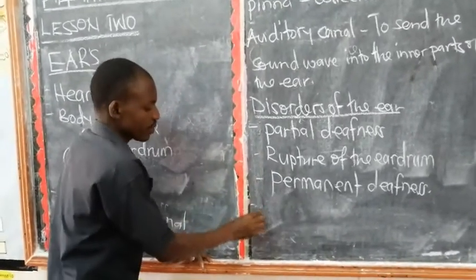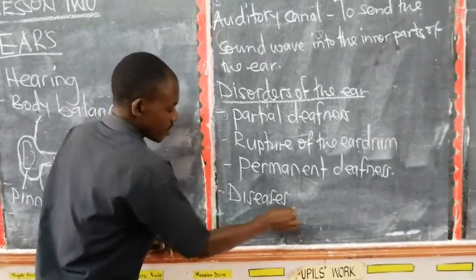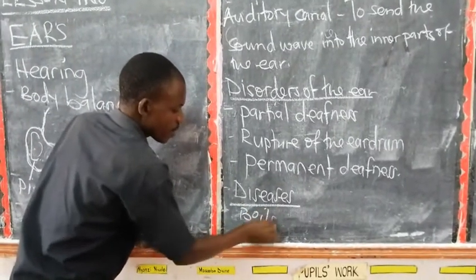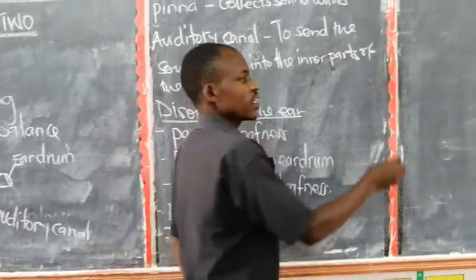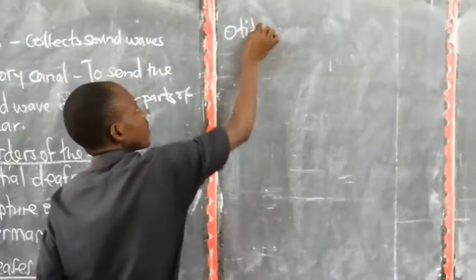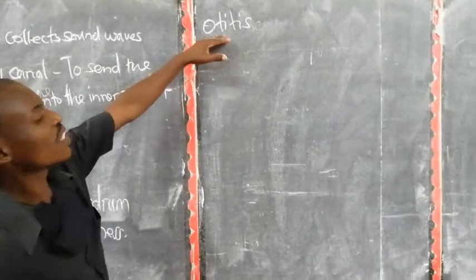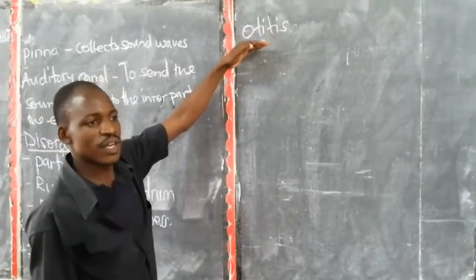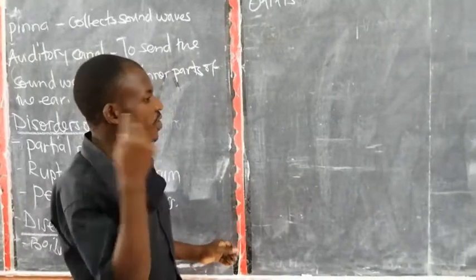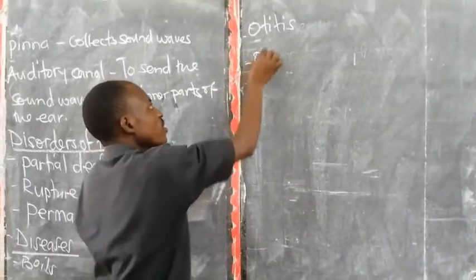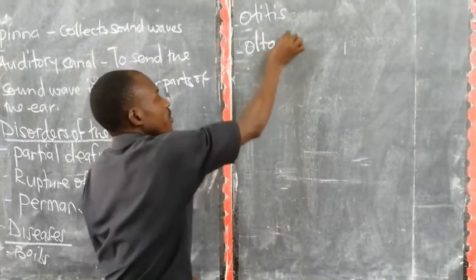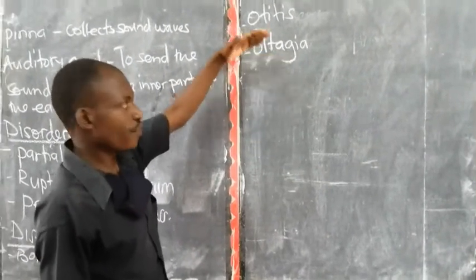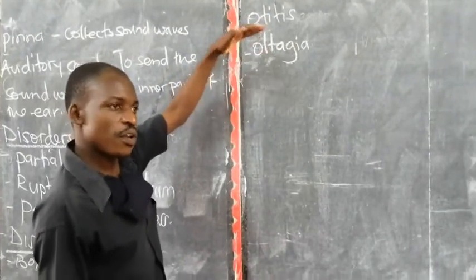Then we have the diseases that affect the ear. We have what we call boils. Then we have another disease called otitis - we have otitis interna and otitis externa. We shall have more detail about this in primary six, as it affects either the outside part or the inside part of the ear. Then we have another disease called otalgia, which is also an ear disease that affects the inside part of the ear. Further details about the ear will come when we reach primary six.